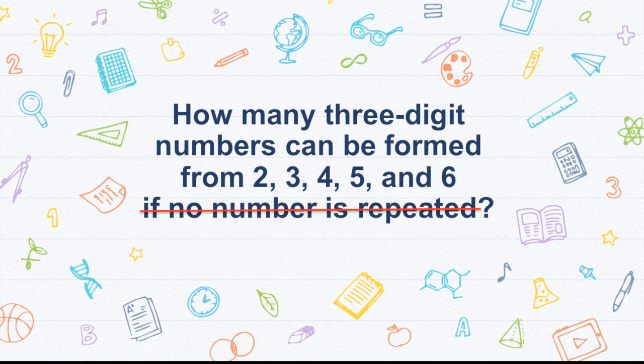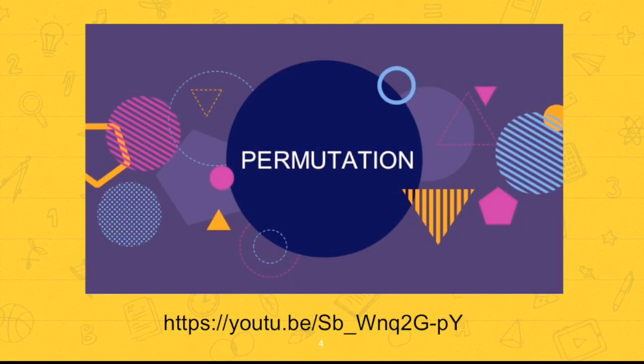So for example, you can have a three-digit number just like 333. So as you can see, the digit 3 there is repeated. So this is what we are going to focus on: Permutation with repetition.